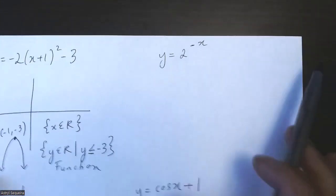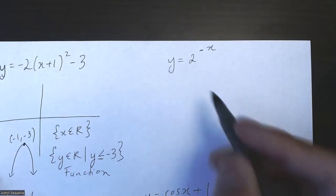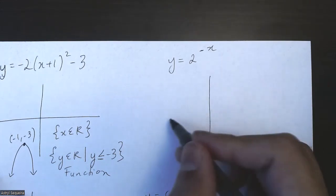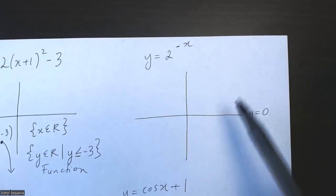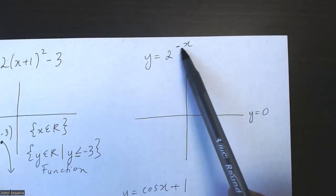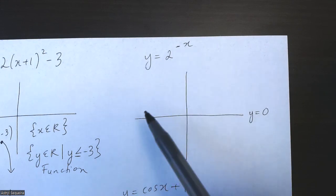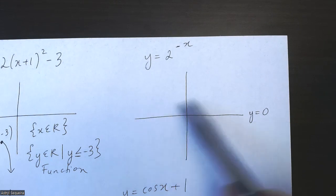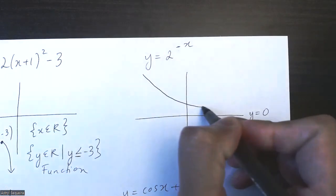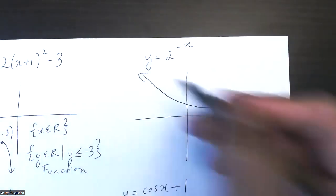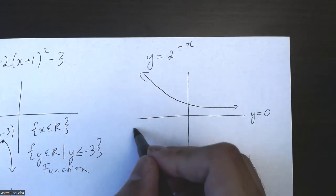This second equation is an exponential equation. There's no c value, which means our horizontal asymptote is at y = 0. This function is exponential growth because the base is greater than one. The negative sign causes a reflection in the y-axis, which means the function is going to look like this.